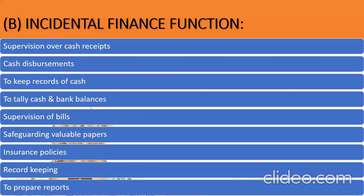Next was cash disbursements — paying attention to the distribution of cash, that is, payment of liabilities as and when they occur. Number three, keeping a record of cash inflow and cash outflow. Thereafter, tallying the cash and bank balances by preparing a bank reconciliation statement. Supervision of bills — the bill receivable and the bill payable. As a manager, he has to see that bills are paid in time, and if there is a bill receivable, the money should be received in time as well.